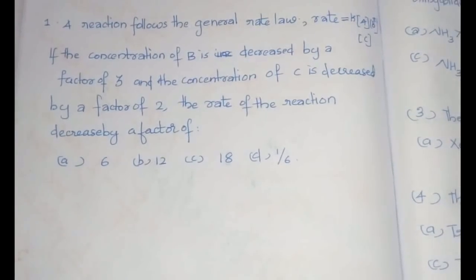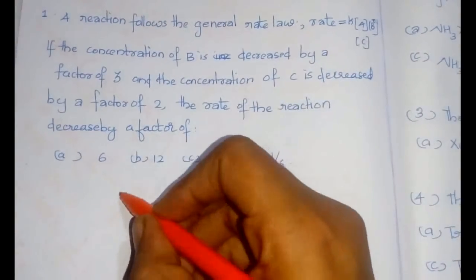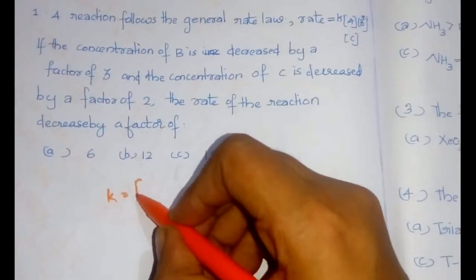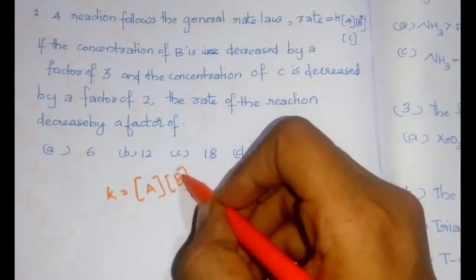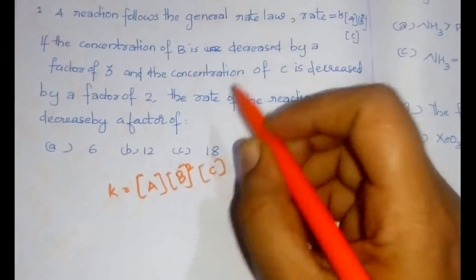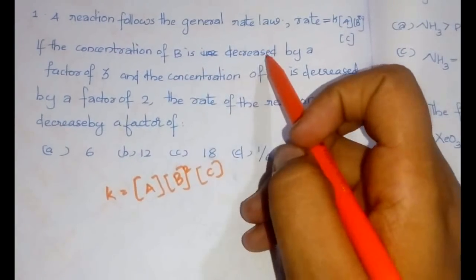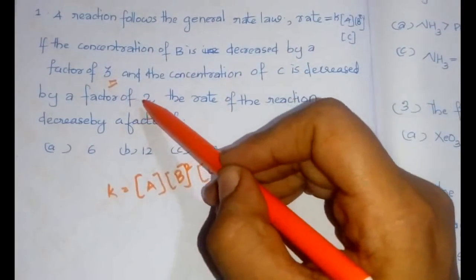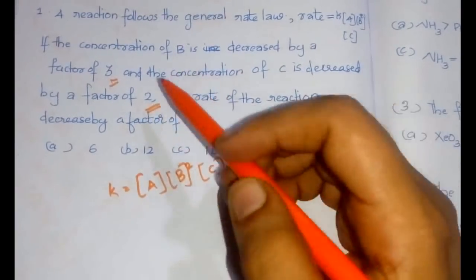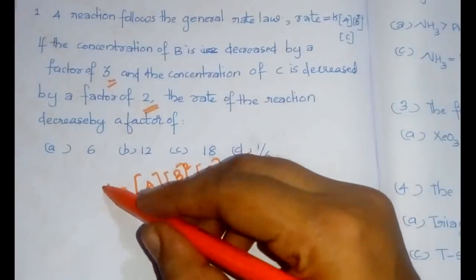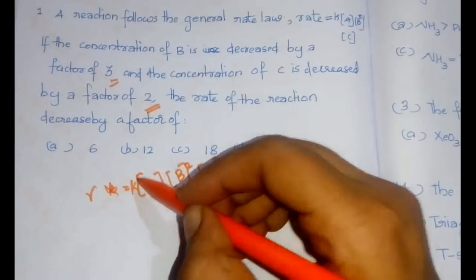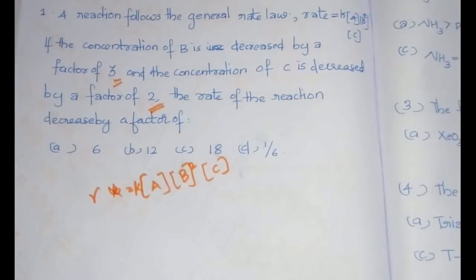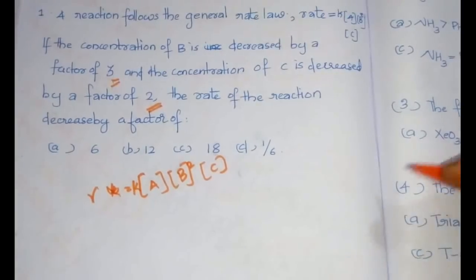A reaction follows the general rate law: rate = K × [A] × [B]² × [C]. The concentration of B is decreased by a factor of 3 and concentration of C is decreased by a factor of 2. We have to find the rate of reaction decreased by a factor of what.